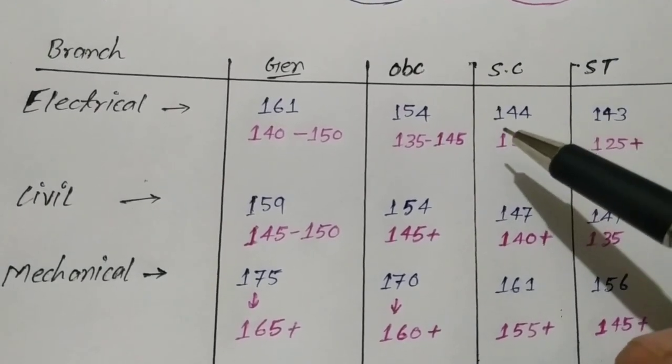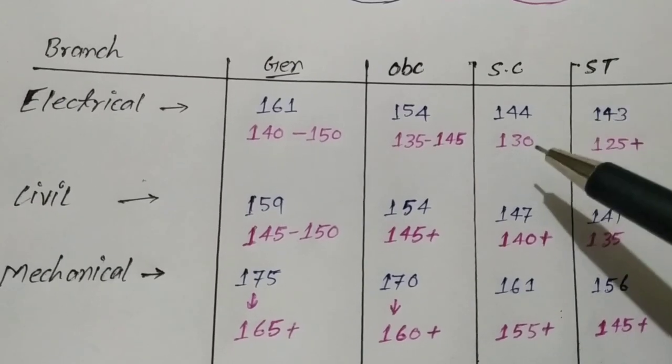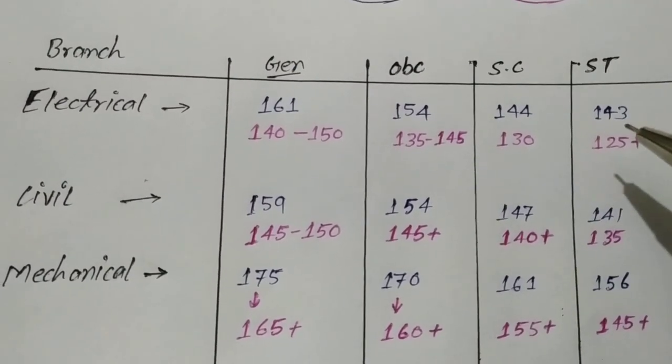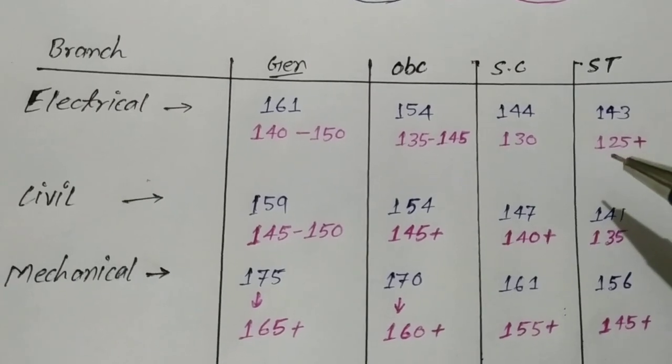In 2017 for electrical, general was 161, expected 140 to 150; OBC was 154, expected 135 to 145; SC was 144, expected 130; ST was 143, expected 125 plus.